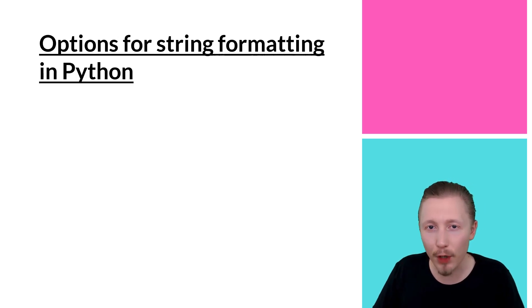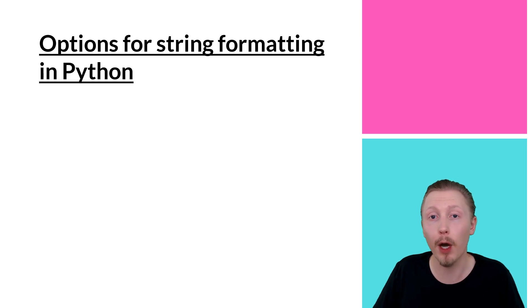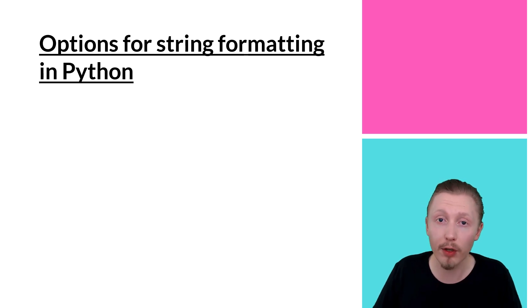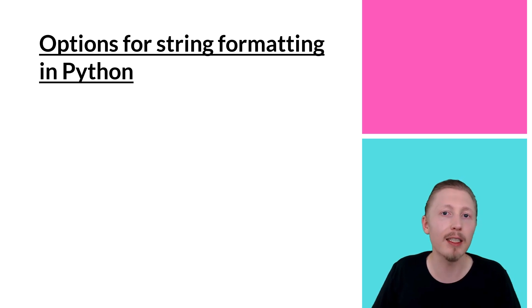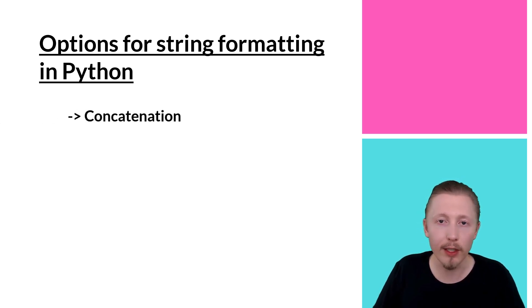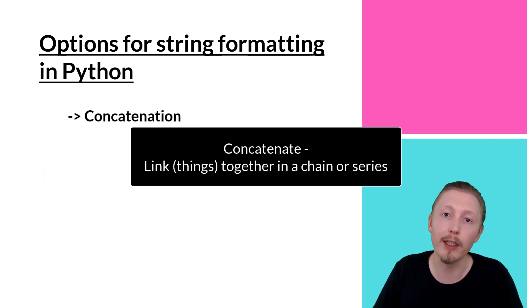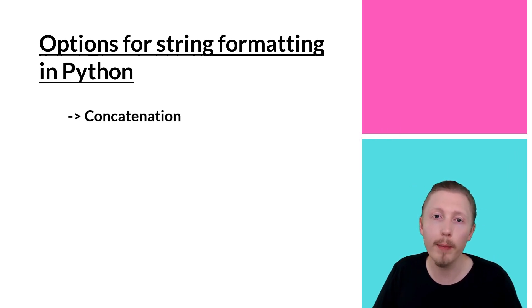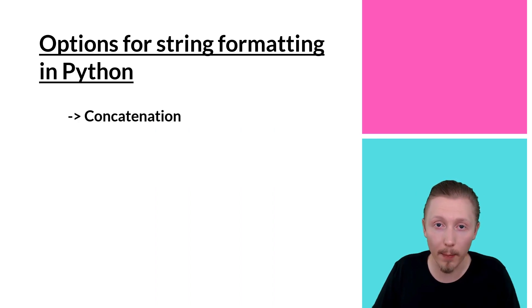There are many different options for managing strings in Python. This is because Python is quite an old language that has evolved over time, and as it's evolved they've added new, better, and faster approaches to managing strings. The first way is concatenation — this is when you just concatenate strings together, so you have a list of strings and you just add them together. We're going to go into how this actually looks in more detail in a moment.